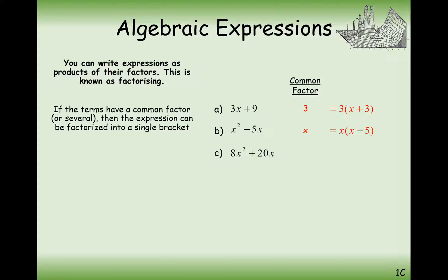It could be a combination of letters and numbers, and we want to pick as high a number as possible. I can see that 2 would go into both of them, but that's not the highest number. 4 would go into both expressions, as would an x as well. So we need 4x as our common factor here. Then we put that at the front of a bracket and think: what do we need to times 4x by to make 8x squared plus 20x?